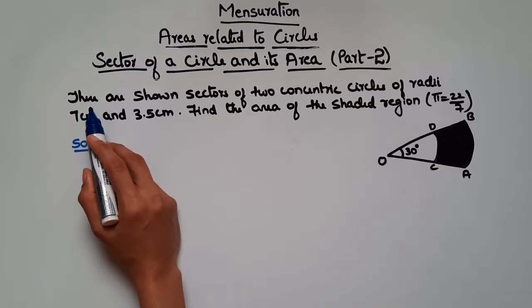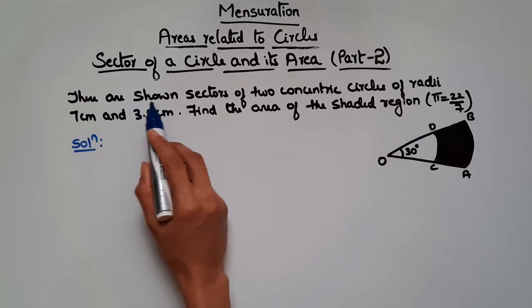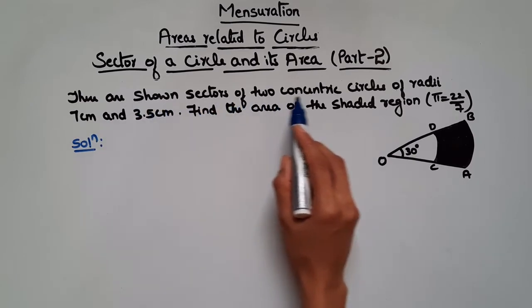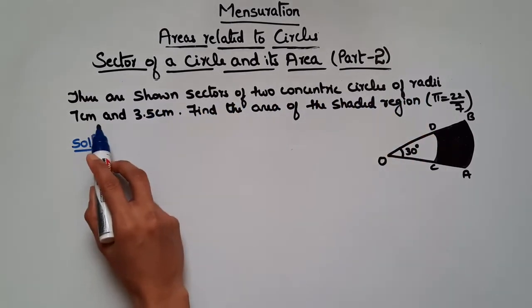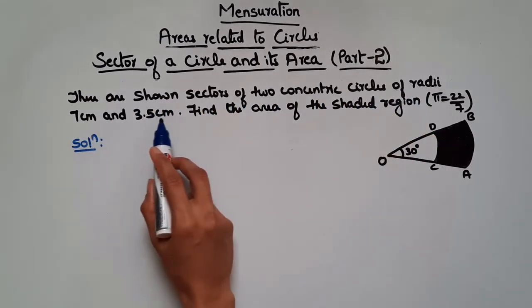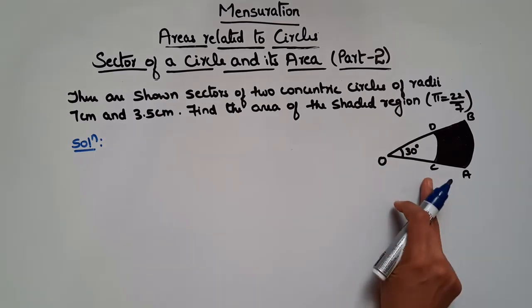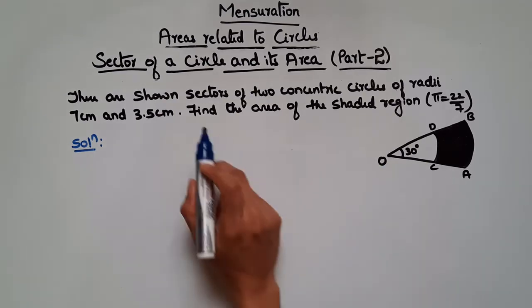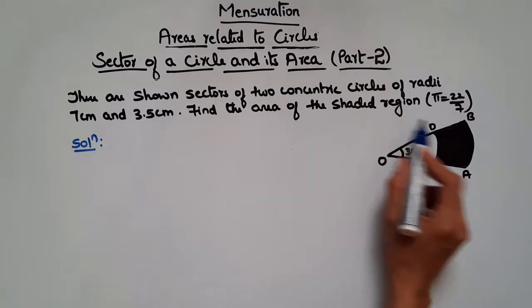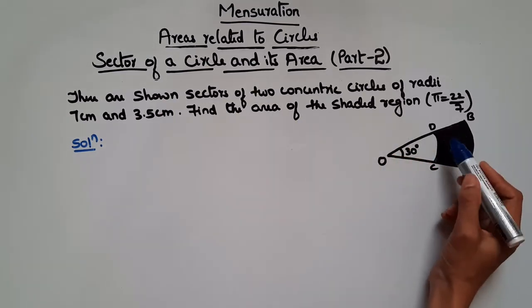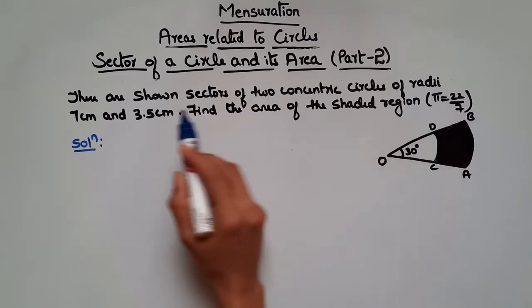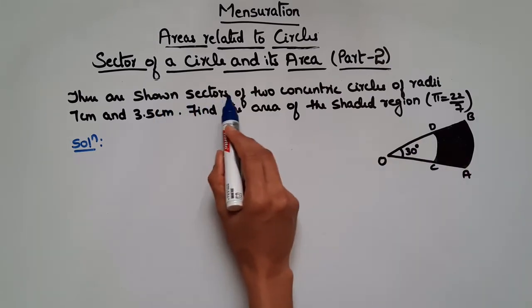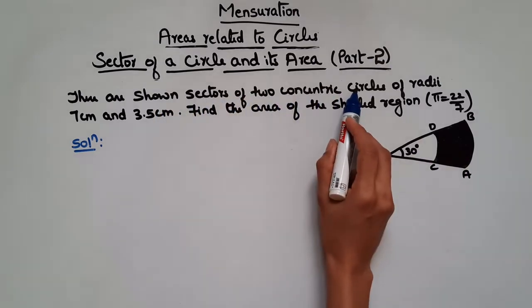So let's see this problem. Here it says there are shown sectors of 2 concentric circles of radii 7 cm and 3.5 cm. So the figure is given. Find the area of the shaded region. So we have to find the area of this region. They have shown the sectors of 2 concentric circles.